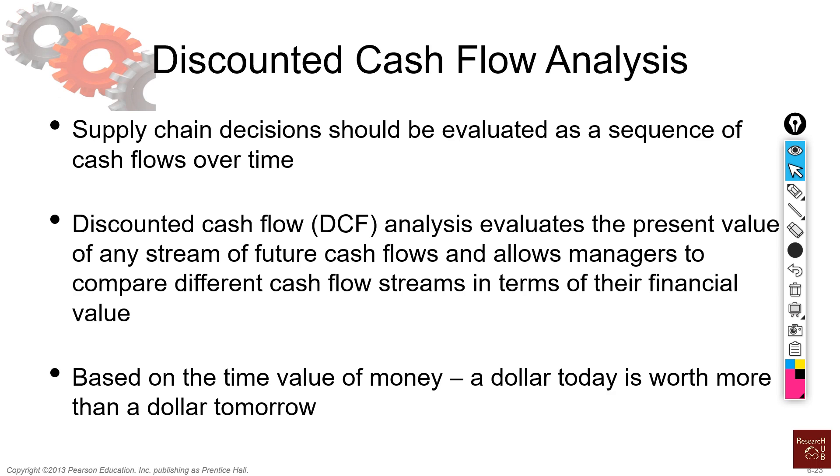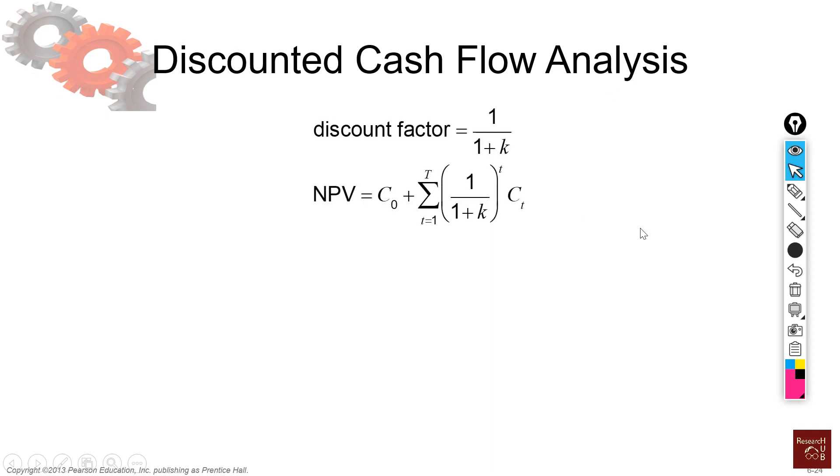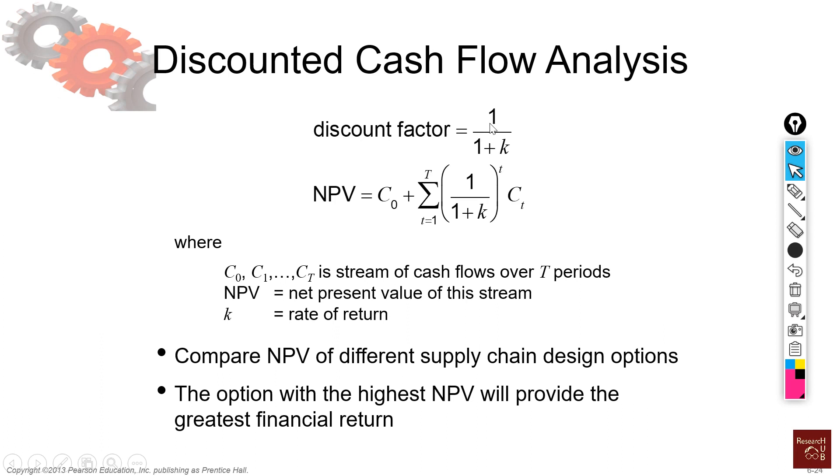Now we have to look into a few equations to calculate this. Normally what we use is one by one plus K as a discount factor. So here you can see that we can have many cash flows as many as we want. This will be our initial cash flow, and then we will have as many cash flows as we want, but all of them will be multiplied with a factor of one by one plus K to the power T. T is the time period.